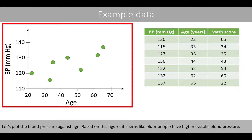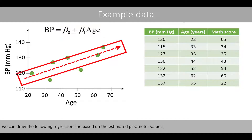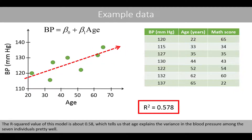Let's plot the blood pressure against age. Based on this figure, it seems like older people have higher systolic blood pressure. If we fit the following regression model to the data, we can draw the following regression line based on the estimated parameter values. The R-squared value of this model is about 0.58, which tells us that age explains the variance in the blood pressure among the seven individuals pretty well.